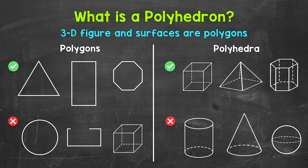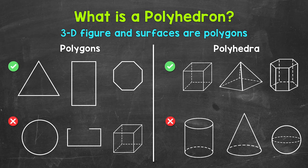Simply put, a polyhedron is a three-dimensional figure with flat surfaces, straight edges, and vertices. The surfaces, or faces, of a polyhedron have to be polygons. This will make a lot more sense as we go through our examples.